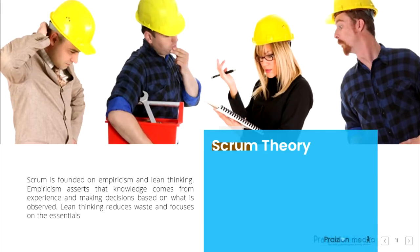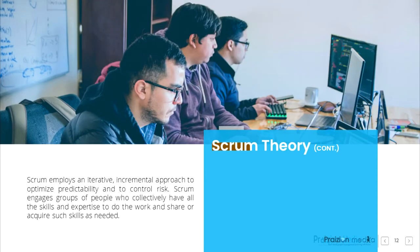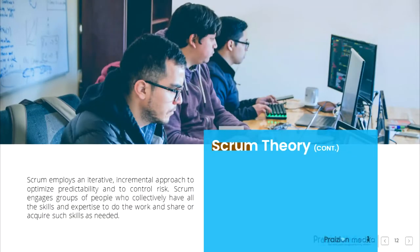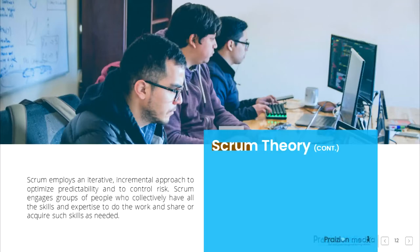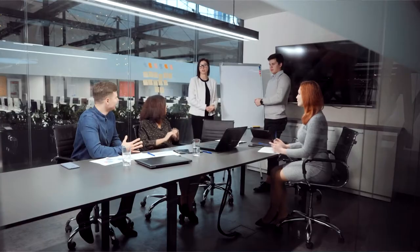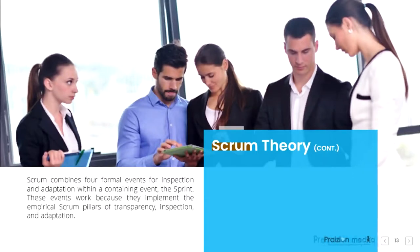Scrum theory. Scrum is founded on empiricism and lean thinking. Empiricism asserts that knowledge comes from experience and making decisions based on what is observed. Lean thinking reduces waste and focuses on the essentials. Scrum employs an iterative, incremental approach to optimize predictability and to control risk. Scrum engages groups of people who collectively have all the skills and expertise to do the work and share or acquire such skills as needed. Scrum combines four formal events for inspection and adaptation within a containing event, the Sprint.